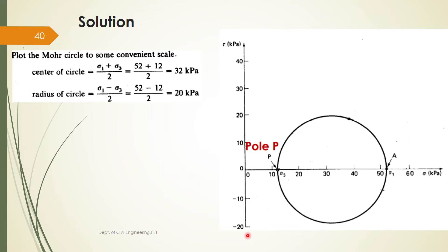One important point: the scale on the horizontal axis and vertical axis should be the same — here one unit equals 10 on both axes. The center of the circle should be at 32 kPa on the sigma axis, so from 0, at 32 you place the center of the circle. The radius of the circle should be 20 kPa. If this type of question is asked, you can ask for graph paper — take a suitable scale, put the compass at 32, and draw the circle.